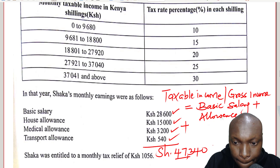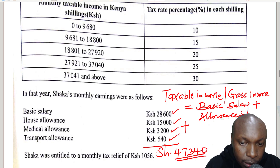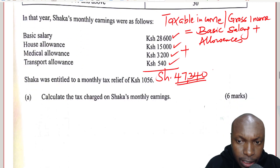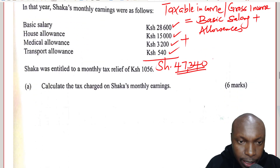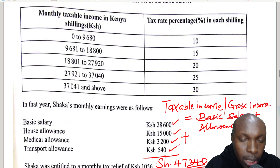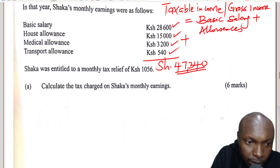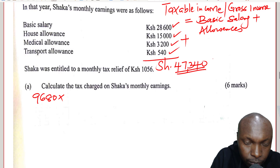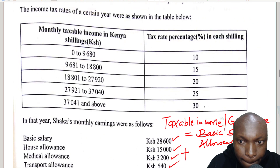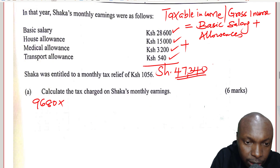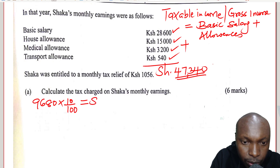That is when you add everything — $47,340 is the taxable income, and this is the income that you are going to tax. After getting the taxable income, now we tax this amount using the slabs. First, look at the slabs to ensure that the sizes are uniform or not uniform. The first slab starts from 0 to 9,680.